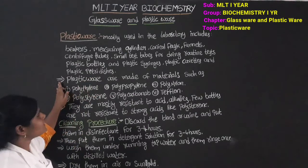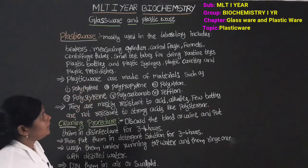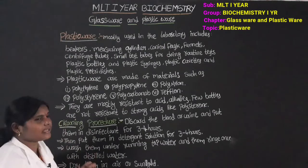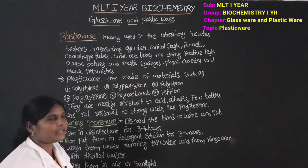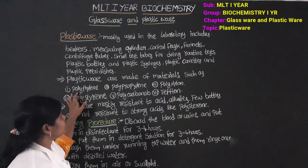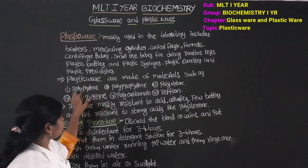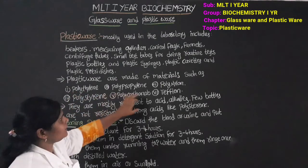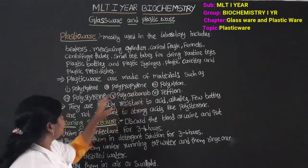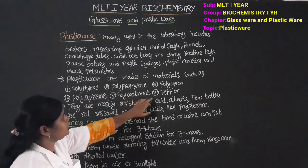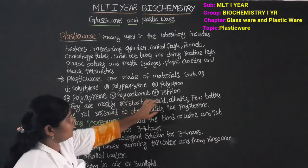Plasticware is made of materials such as polythylene, polypropylene, polynylon, polystyrene, polycarbonate, and teflon.